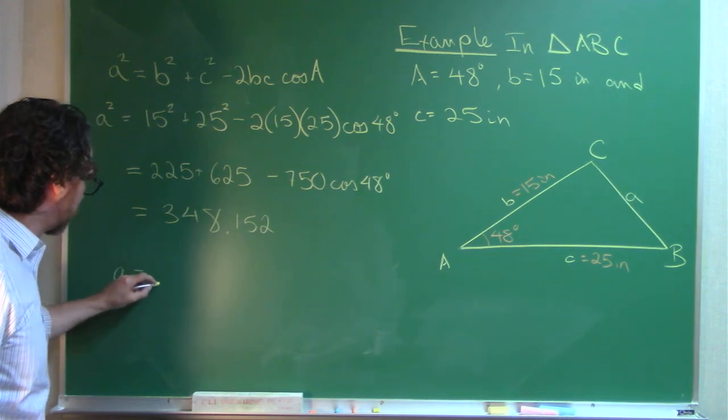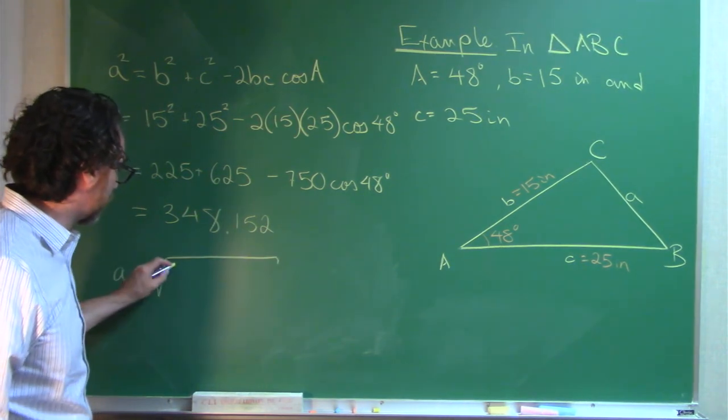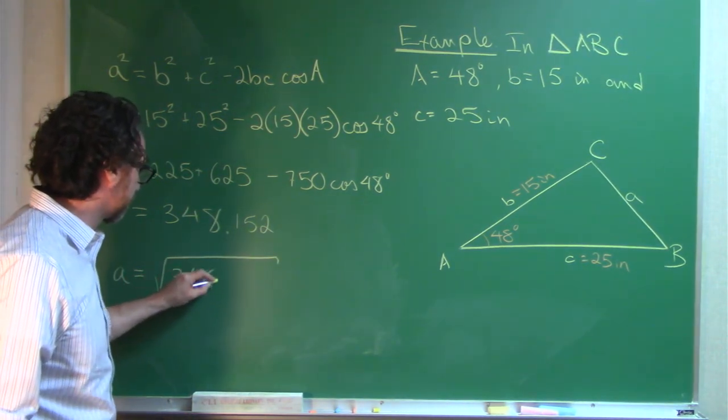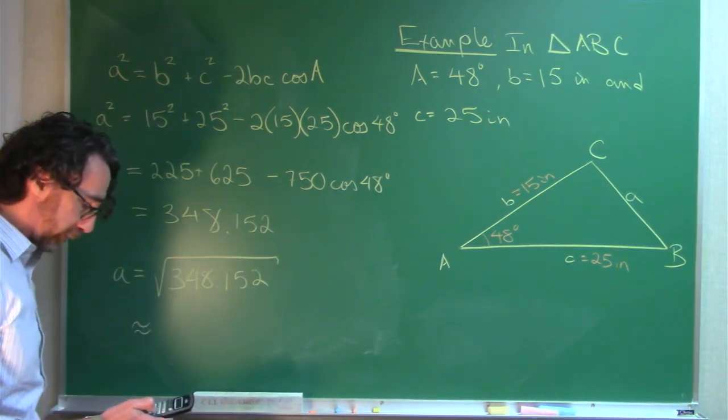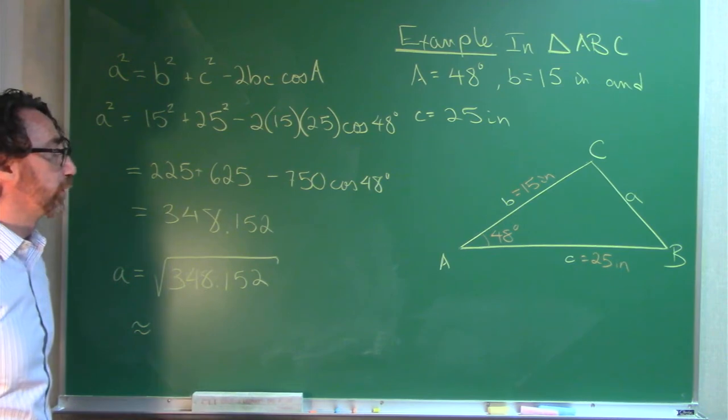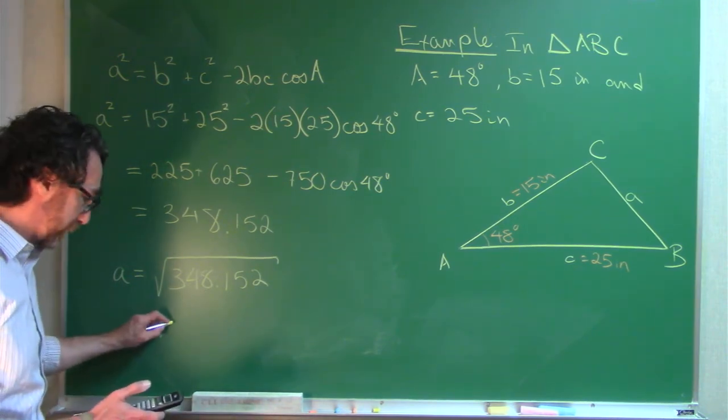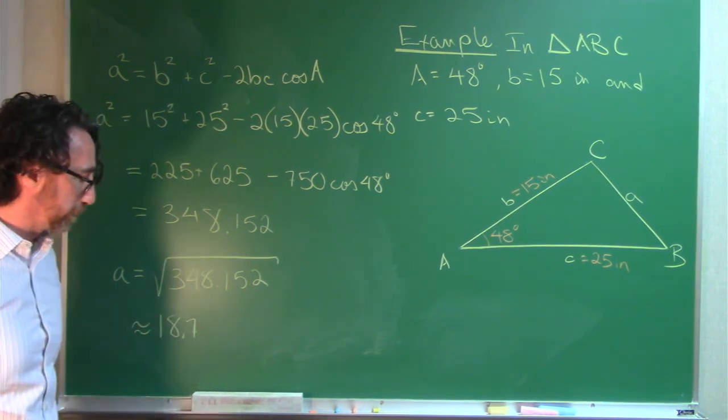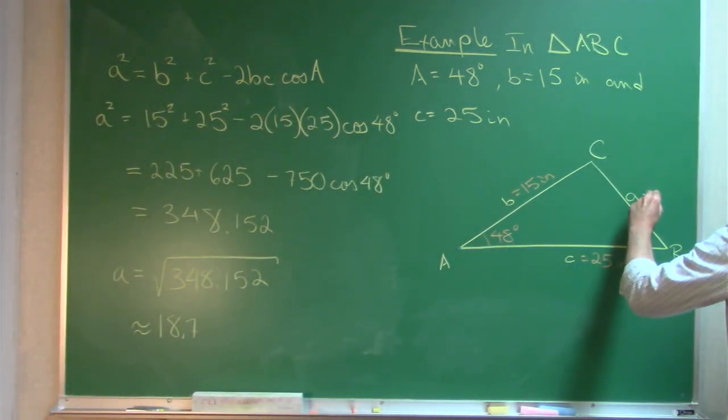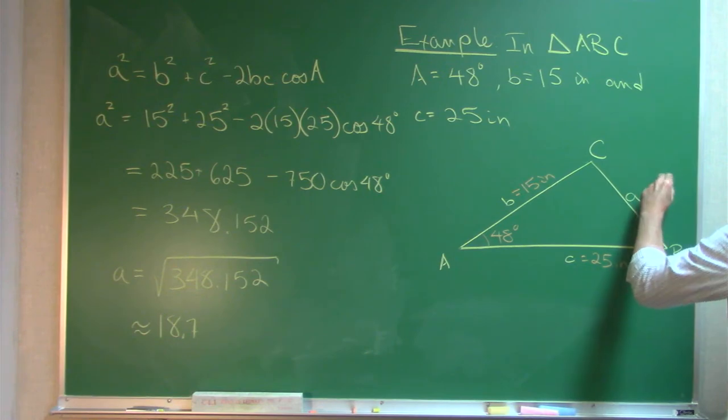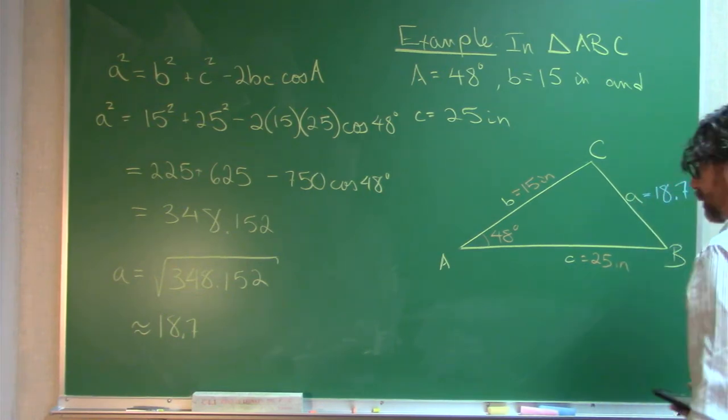So A is going to be the square root of all that, which is approximately 18.7. We'll put that over here in blue.